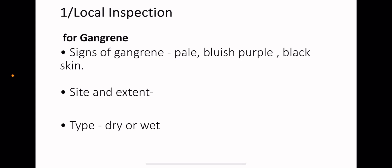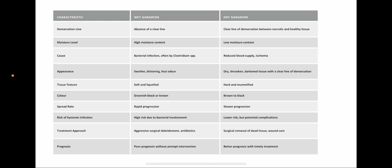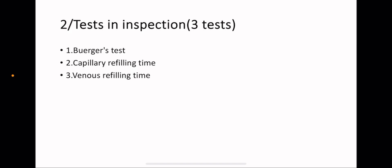Local inspection for gangrene: check for any signs of gangrene, and these signs include pale, bluish purple, black skin. Check for the site and the extent of the gangrene if you find it. This table shows the difference between wet gangrene and dry gangrene. What I want you to remember: in wet gangrene there is no clear line of demarcation; in dry gangrene there is clear line of demarcation. Wet gangrene usually due to arterial insufficiency plus venous occlusion. Dry gangrene usually just arterial insufficiency. Wet gangrene more prone to sepsis and infection. Dry gangrene has less risk of infection and sepsis.